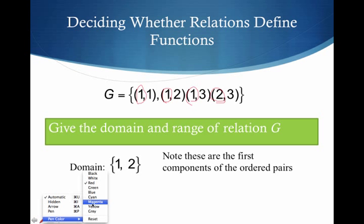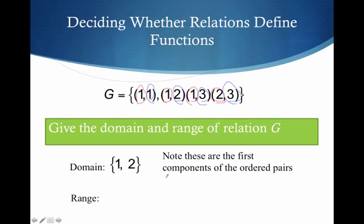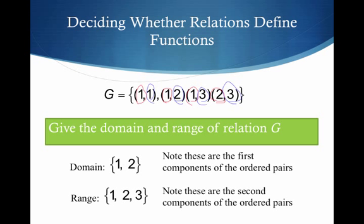All right, what about the range? Well, I have a 1, a 2, a 3, and a 3. And so what do I list? I list the 1, the 2, and the 3, even though 3 is repeated. And again, these are my second components.